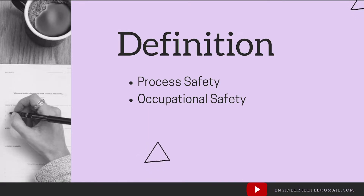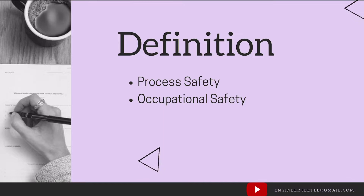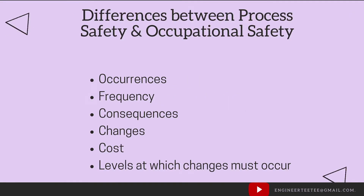On the other hand, occupational safety deals with all aspects of physical, mental, and social health and safety in the workplace. The hazards that fall under occupational safety include slips, trips and falls, exposure to noise, exposure to fires that could cause minor burns and cuts, and repetitive strain injuries.